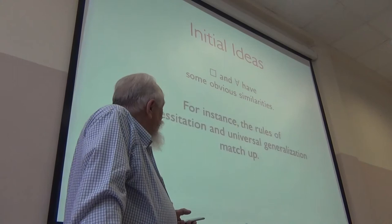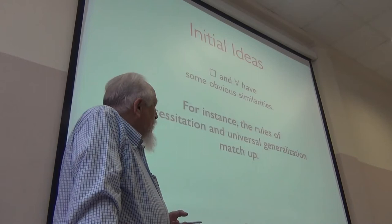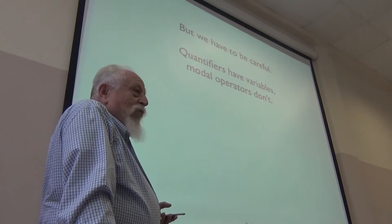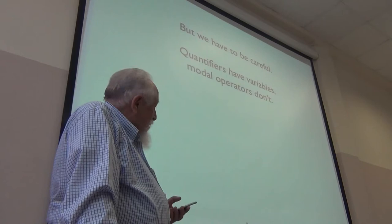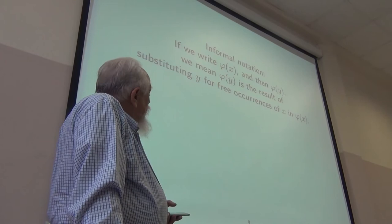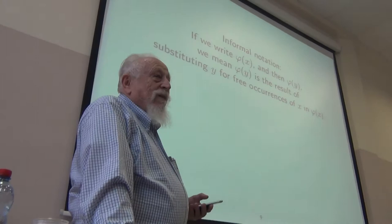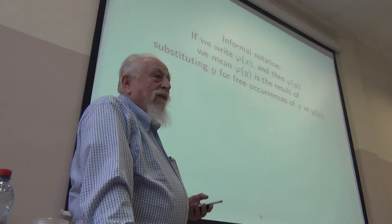Box and for-all certainly have some very obvious similarities. You have a rule of necessitation: from x, conclude box x. You have a rule of universal generalization: from x, conclude for-all x. But the question is, what are these things peculiar to quantifiers? They have variables associated with them — modal operators don't — and we'll see what that does.